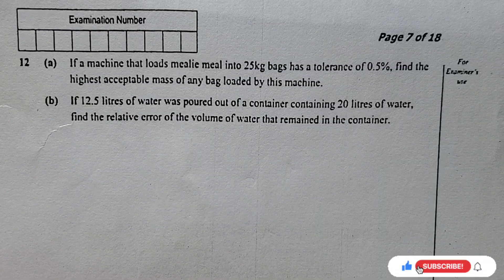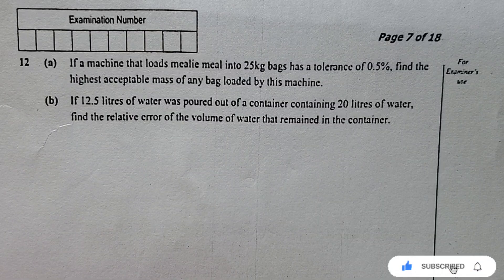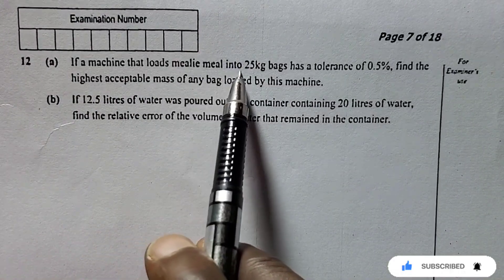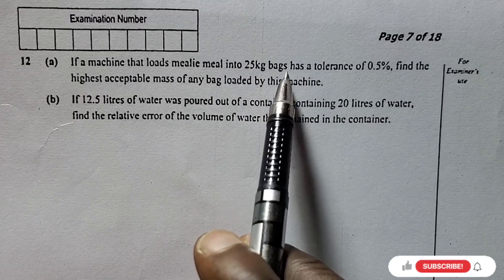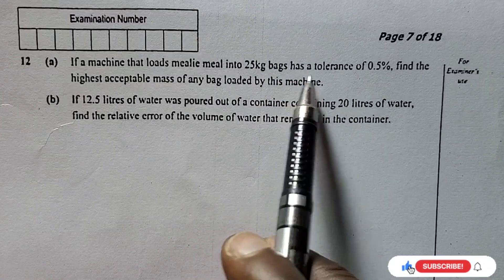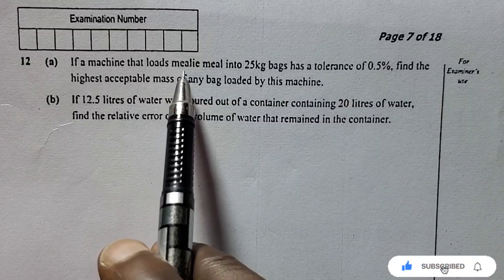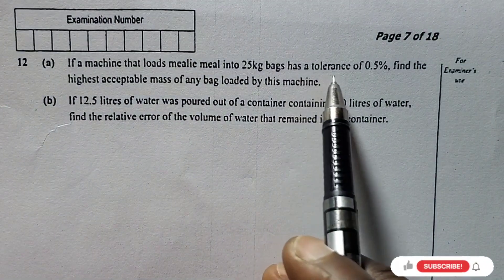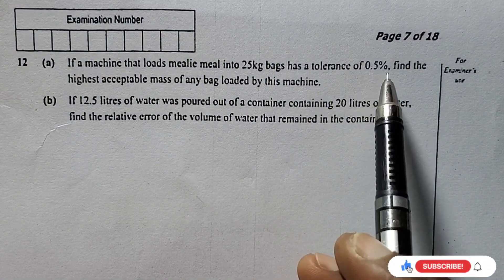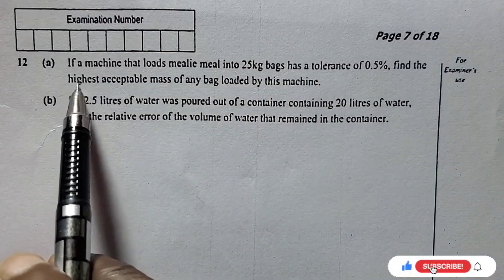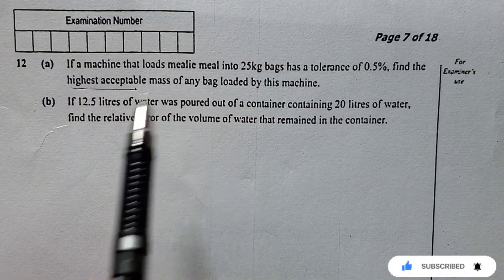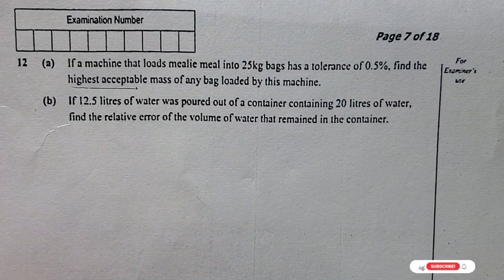The question says: if a machine that loads meal into 25 kg bags has a tolerance of 0.5%, find the highest acceptable mass of any bag loaded by this machine. This is not difficult, this is very simple.